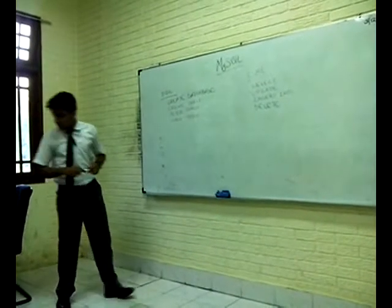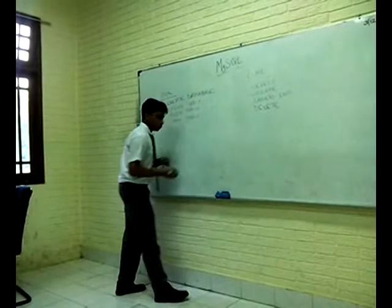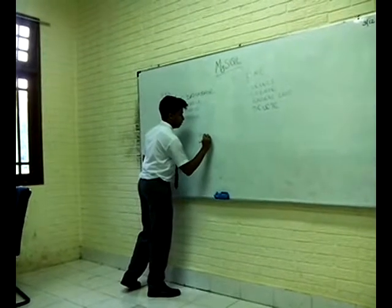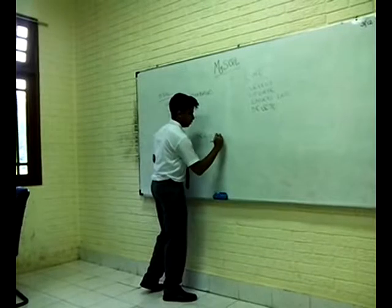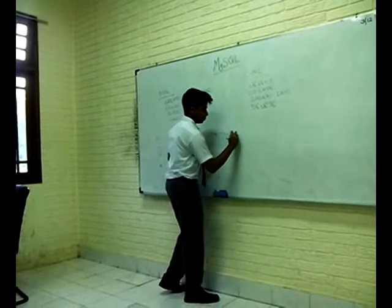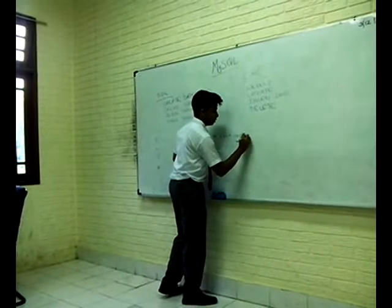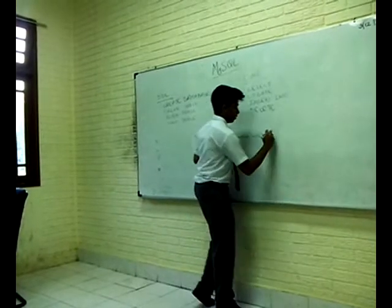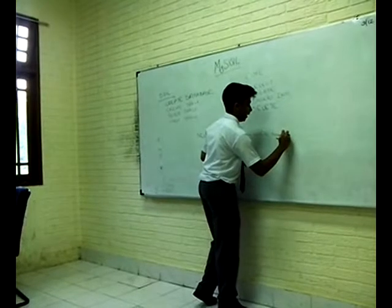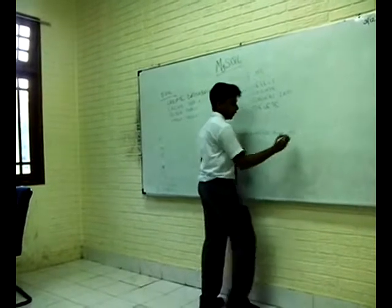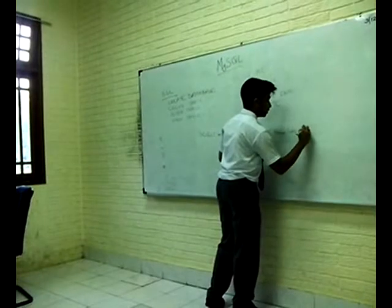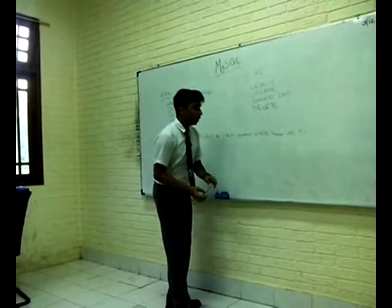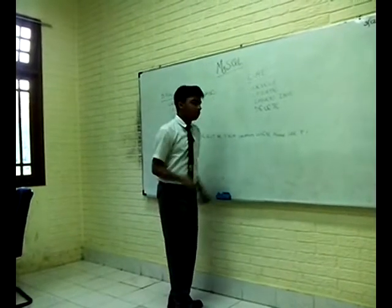Then we have the LIKE statement. If I give select star from table where name like and here we give percentage P. So it will search for any value of name that starts with P but has any number of attributes or characters after it.